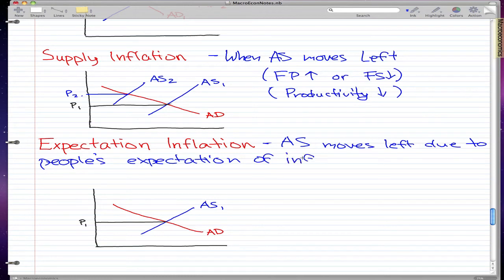People are expecting inflation, and that's what causes the aggregate supply to move left. What happens is people expect inflation, and then this leads them to ask for higher wages.